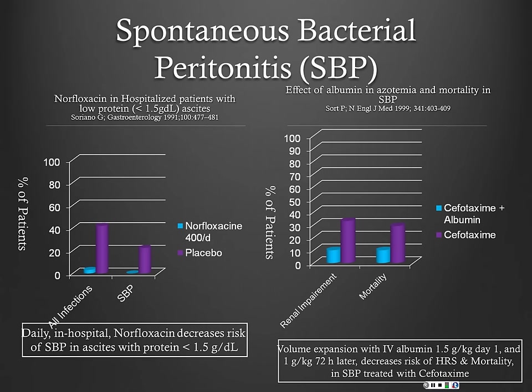This slide shows the use of daily norfloxacin in patients with low total protein — the cutoff here is 1 g/dL, though some guidelines say 1.5. We use 1.5: if total protein is less than 1.5, think about SBP primary prophylaxis. This is for in-hospital stay only. Once they go home, you don't need to continue the antibiotic unless they've had a previous episode of SBP or develop SBP in the hospital.